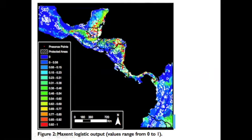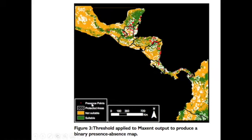Species distribution models collect random background information from across the study area and produce a map showing relative habitat suitability, which can be converted to a logistic output where green is suitable habitat and orange is not. But you're making bold assumptions — for example, in the Yucatan Peninsula you might have a large area of apparently suitable habitat with no data from it, leading to very strong assumptions about where species occur.